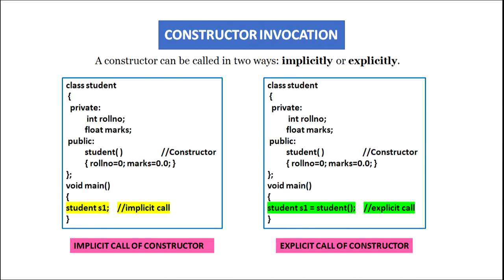For explicit call, we again define class student with private data members roll number and marks, and in the public section declare the constructor student, initializing roll number to 0 and marks to 0.0. In main, we give the statement 'student s1 = student()'. The object s1 will be created and simultaneously the constructor function will be invoked. Here we are calling the constructor explicitly, which is why this type of call is called explicit call of constructor.